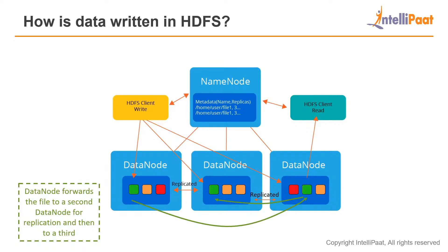The data node forwards the file to the second data node for replication and then to a third. This is one of the most interesting factors of HDFS. Say you have file blocks — you have divided your file into blocks. If one of these data nodes fails, what happens to that first block? If your file has been divided into three blocks and one data node fails, do you lose the first block and only have two-thirds of the file? No. What HDFS does is replicate all of these files across all of the data nodes. So when one data node fails, you still have the backup of that file and can still read it intact. That is one of the key factors: data replication.